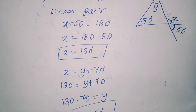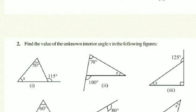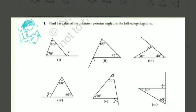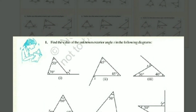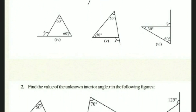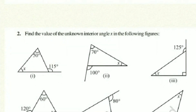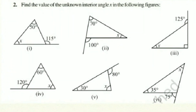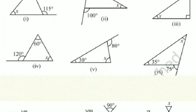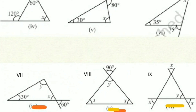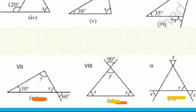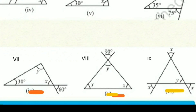I hope students understood. I will now give some homework. Question 1: Find the value of the unknown exterior angle x in the following diagrams — based on exterior angle property. Question 2: Find the value of unknown interior angle x in the following figures — using both exterior angle property and angle sum property. There are nine questions total; questions 8 and 9 are tricky. If you don't understand, let me know. Thank you, everyone.